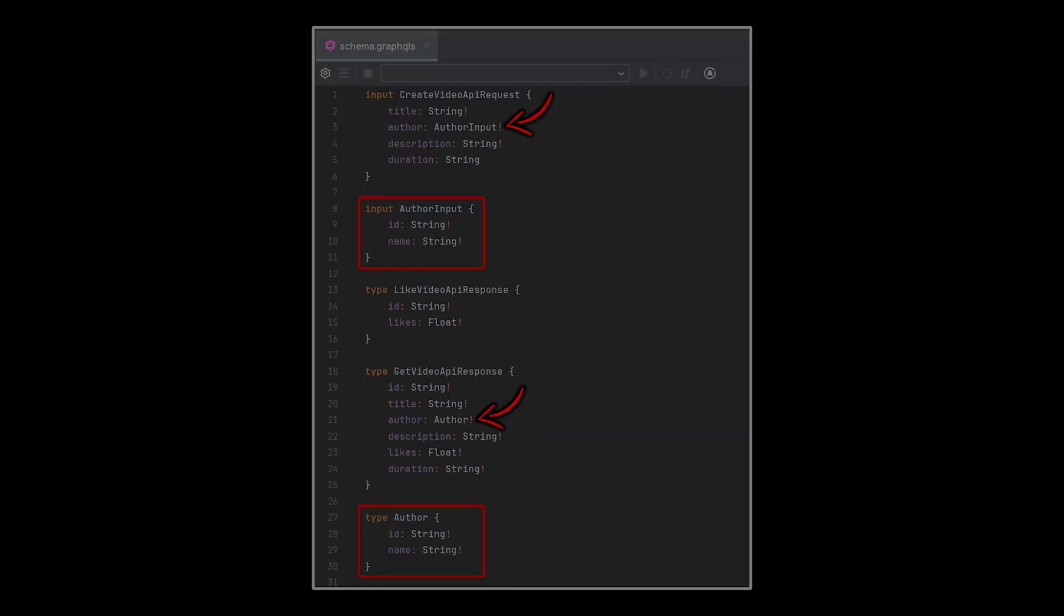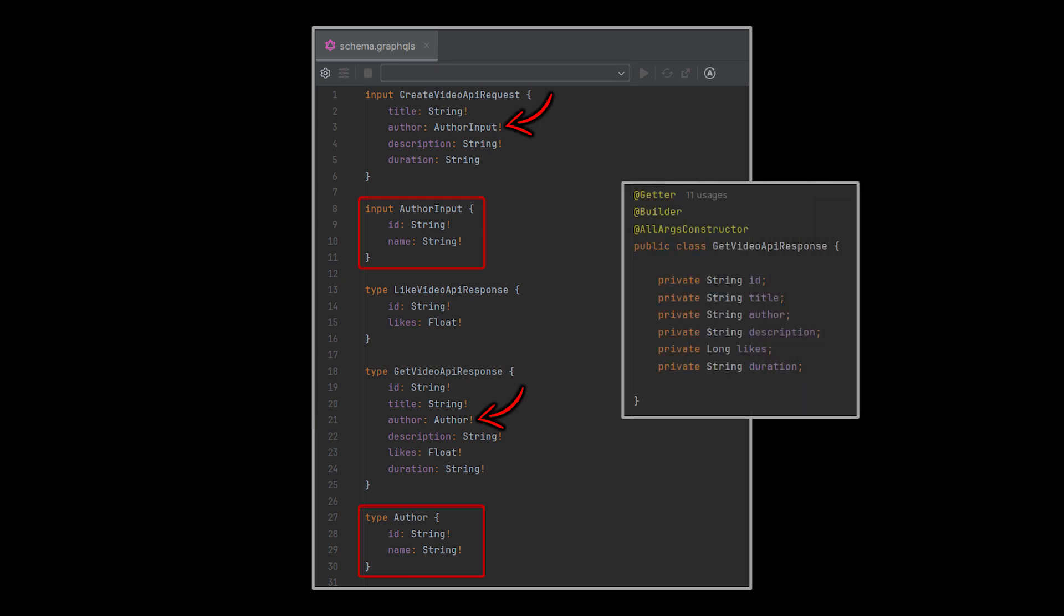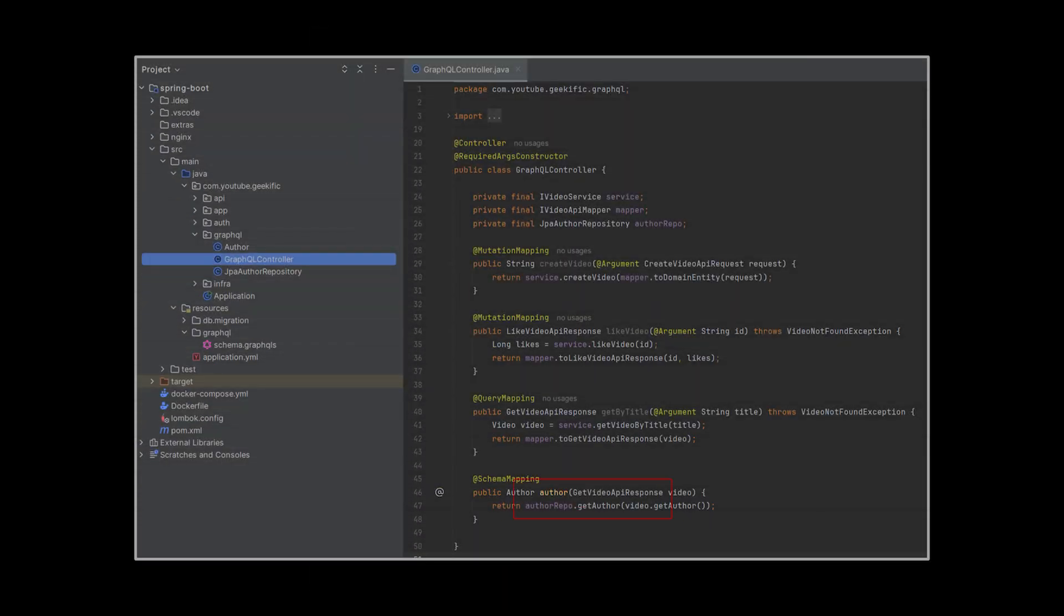Okay, so with the current state of our classes, GraphQL won't know how to map between the type written in its schema and the Java object, since in Java the author is a string and not a complex object. To fix this, we will create a new method in the controller annotated with @SchemaMapping.